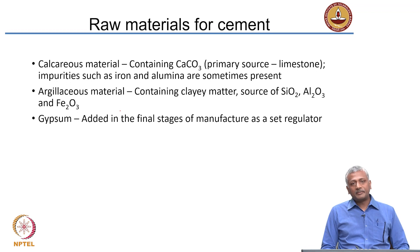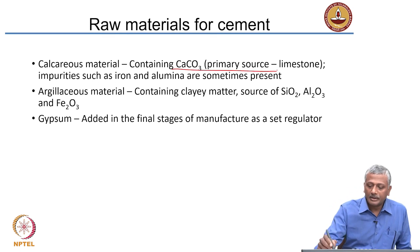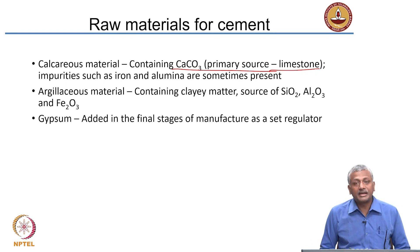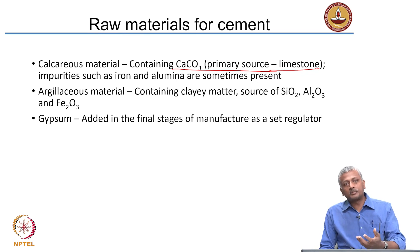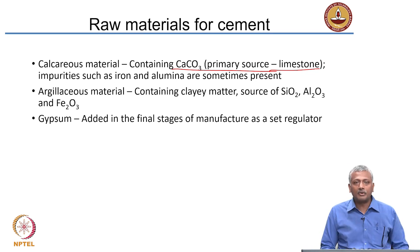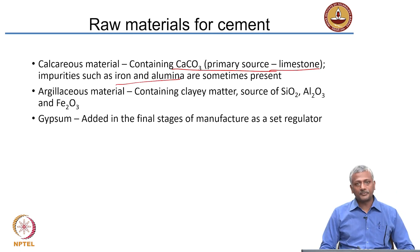What are the raw materials required to make cement? The principal component of cement is lime, for which you need limestone. Limestone contains the most pure form of calcium carbonate, and any source containing a large quantity of calcium carbonate is needed. Sometimes it may have impurities such as iron and alumina.